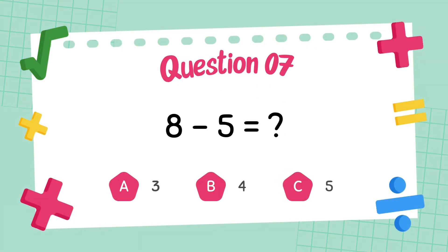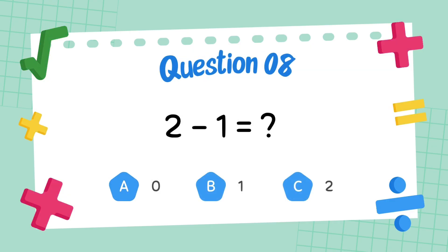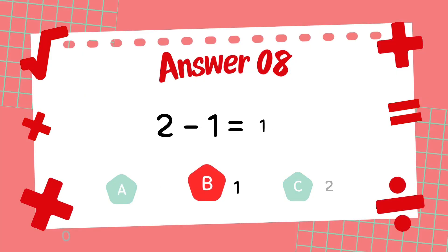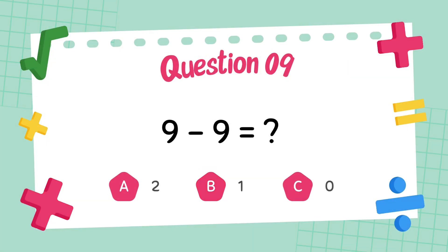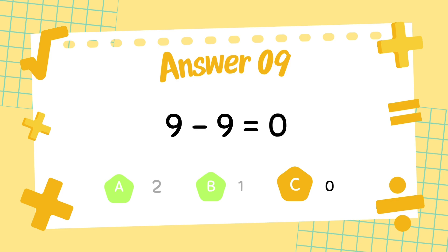What is eight minus five? The answer is three. What is two minus one? The answer is one. What is nine minus nine? The answer is zero.